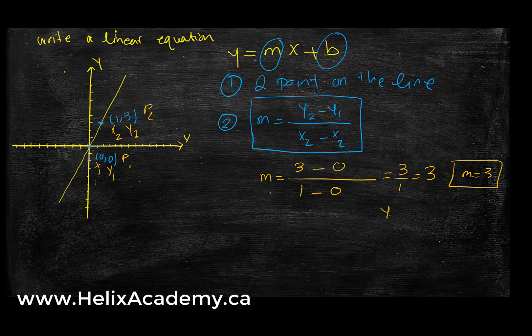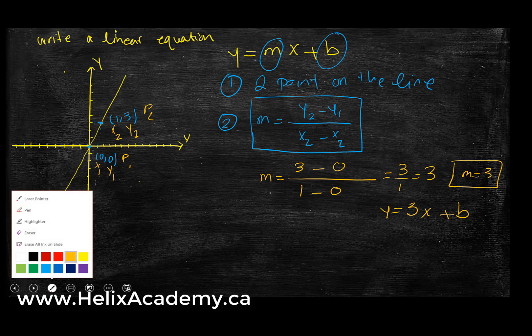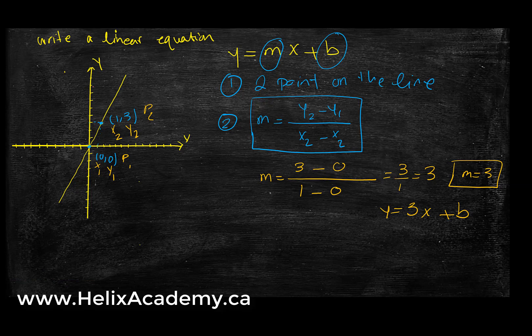Therefore, if I write my equation, I have y equals 3x plus b. Now I need to find b, which is where the line intersects the y-axis. Looking at the graph, it intersects at 0. So b equals 0, and my equation simplifies to y equals 3x.